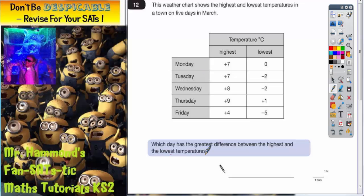Which day has the greatest difference between the highest and lowest temperatures? So we need to find the difference between the numbers in these two columns. On Monday the difference between seven and zero, that's easy. That's just going to be a difference of seven.